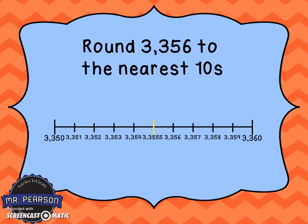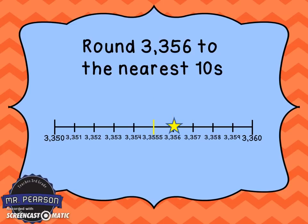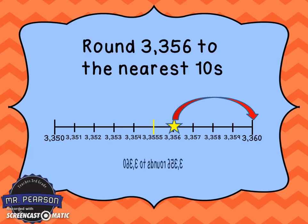Now we're going to round 3,356 to the nearest ten. Again, we ask ourselves: what two tens is this number between? We came up with that it's between 3,350 and 3,360. So we fill in our number line — 3,351 all the way down to 3,359. We put 3,356 on our number line and notice that it is closest to 3,360, so it rounds to 3,360.